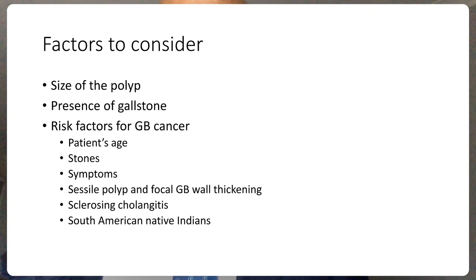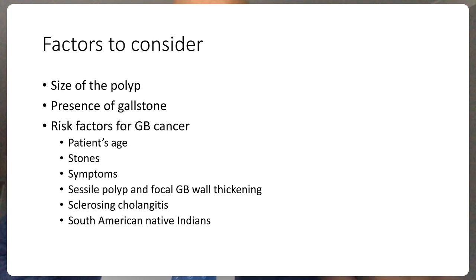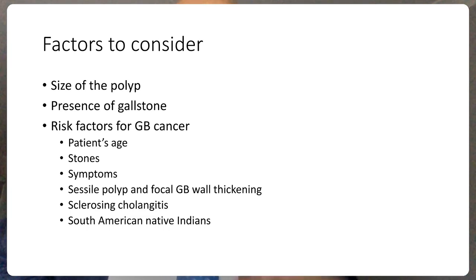Risk factors for gallbladder cancer include: patient's age, particularly above 80; the presence of stones; and the presence of symptoms. If the patient is older, has stones, or is symptomatic, then we may be dealing with gallbladder pathology in addition to the polyp, making surgery more likely. The ultrasound will also tell us whether the polyp is sessile or pedunculated. Sessile polyps and focal wall thickening of more than 4 mm should be taken seriously because they carry a risk of gallbladder cancer — they could represent an early malignant lesion.